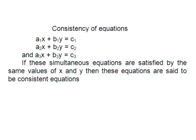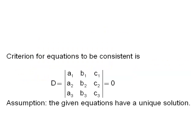Consistency of equations. Consider three equations in two unknowns x and y: a1x + b1y = c1, a2x + b2y = c2, a3x + b3y = c3. If these simultaneous equations are satisfied by the same values of x and y, they are said to be consistent. The criterion for consistency is that the determinant with rows (a1, b1, c1), (a2, b2, c2), (a3, b3, c3) should equal zero. Note that this condition is obtained assuming the equations have a unique solution; however, this condition can also be satisfied for equations which have no solution. Hence, we must verify whether a solution exists before applying the consistency condition.